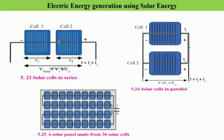Here we have two photovoltaic cells, cell 1 and cell 2, connected in series combination. V1 is the potential difference across cell 1 and V2 is the potential difference across cell 2. So the total potential difference will be equal to the sum of the potential differences: V total = V1 + V2.